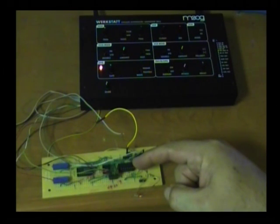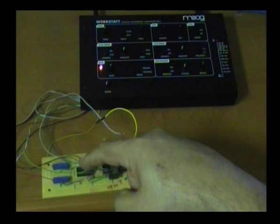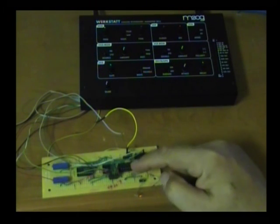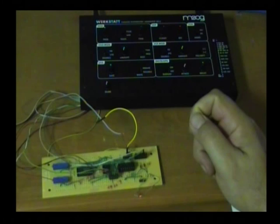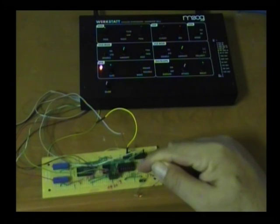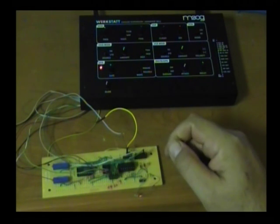Four of the Schmitt triggers in the hex Schmitt trigger chip are used for the four analog switches. There are two Schmitt triggers left and I have used these to produce a simple delay circuit.